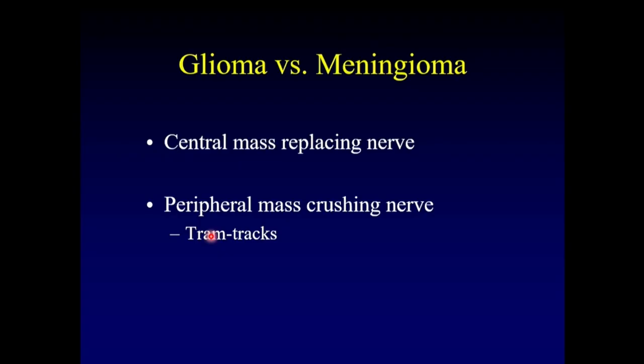Let's talk about the difference between gliomas and meningiomas. These are both masses that occur within the intraconal space along the optic nerve, but the glioma is a central mass that replaces the nerve — it is an expansion of the nerve itself — whereas a meningioma arises from the peripheral nerve sheath. So it is a mass around the nerve, not a mass of the nerve, and that results in a classic imaging appearance of tram tracks.